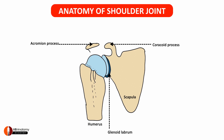Let's now add one more important structure here — the tendon of the long head of biceps brachii, taking origin from the supraglenoid tubercle. Let's colour that.